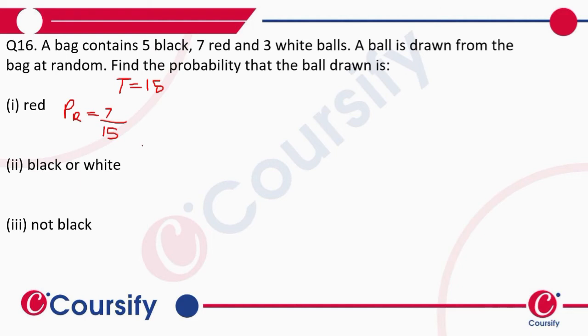That is 5 plus 3, that is 8. So the probability of finding white or black balls is 8 by 15.